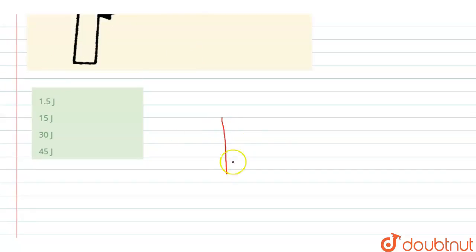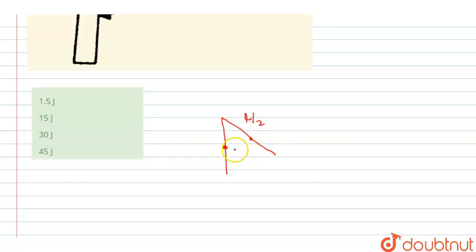So in the initial condition, this is our meter stick and the center of mass will be at the middle. In the final condition, the center of mass will also be at the middle. This length is L, so the half length will be L upon 2. If you draw the perpendicular from here, this change in height delta h can be defined.